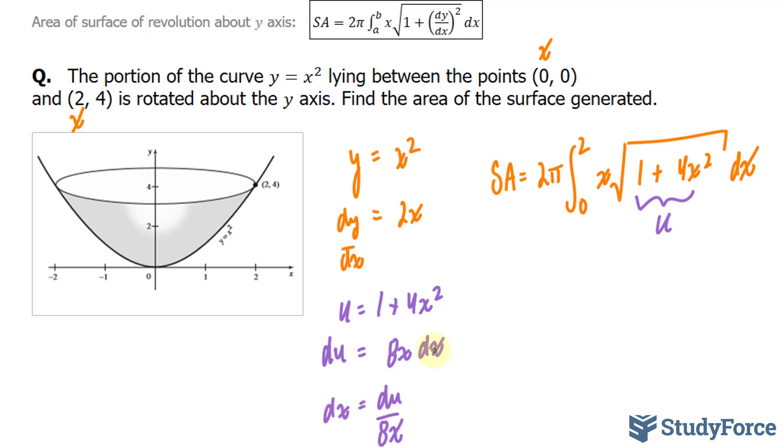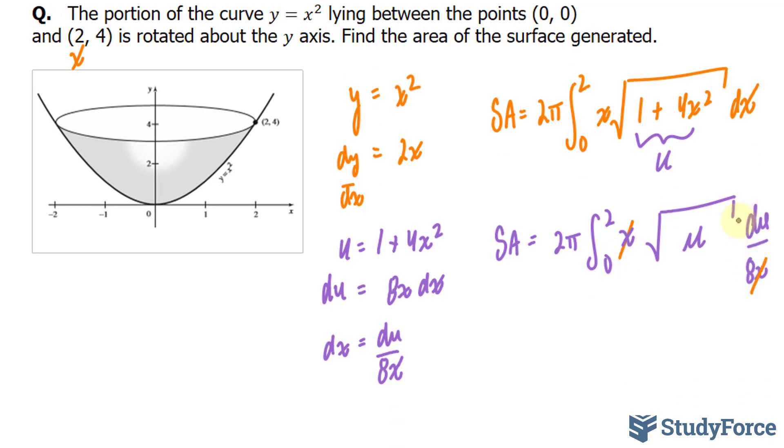So our integral with dx replaced with du over 8x and the radicand replaced with u gives us the following. This x and this x will cancel each other out. And we can pull out 1 over 8 so that we have 2π over 8 times the integral between 0 and 2 for the function, the square root of u, du.